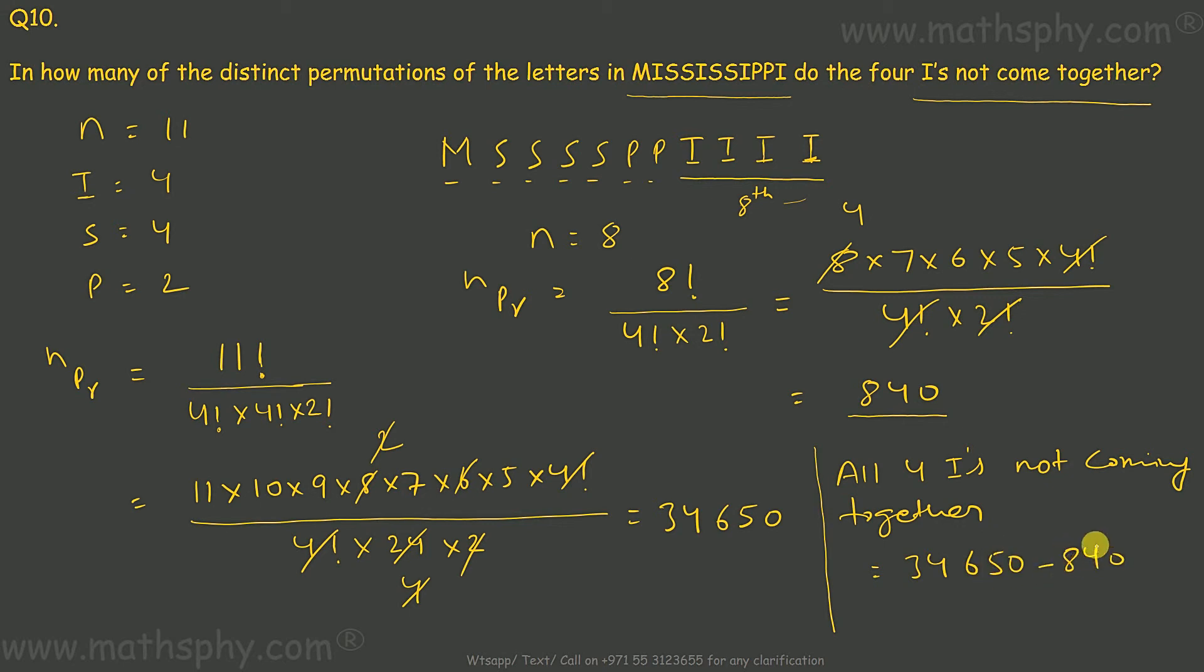Only those arrangements with all the I's are coming together. Take this off, 33,810. So there would be 33,810 arrangements where all these four I's are not coming together. Alright?